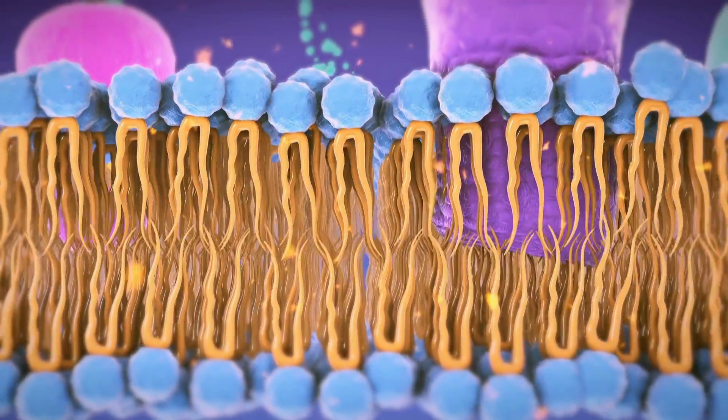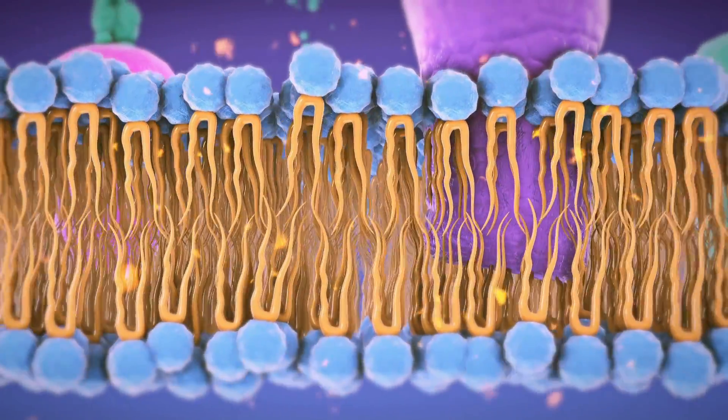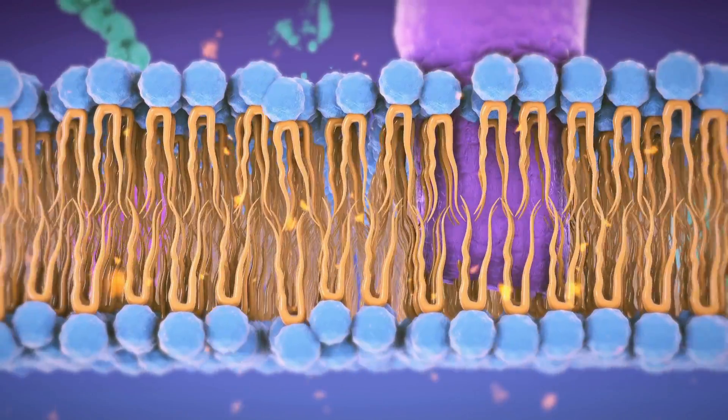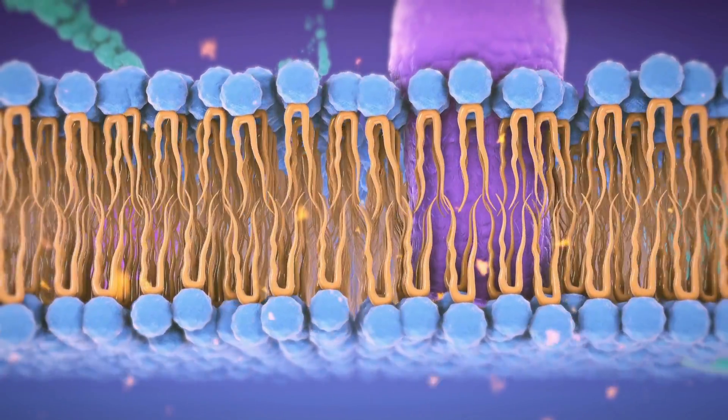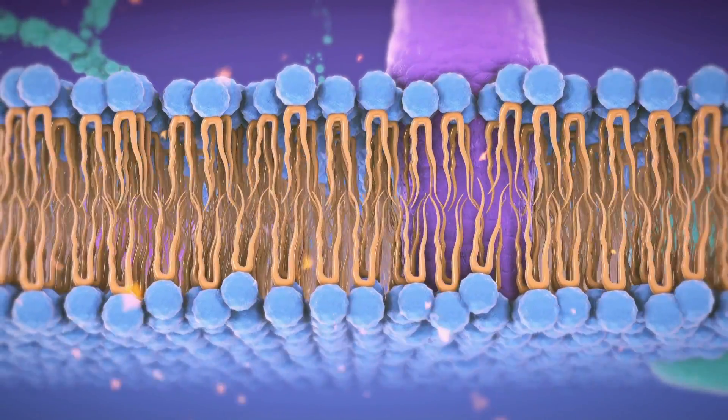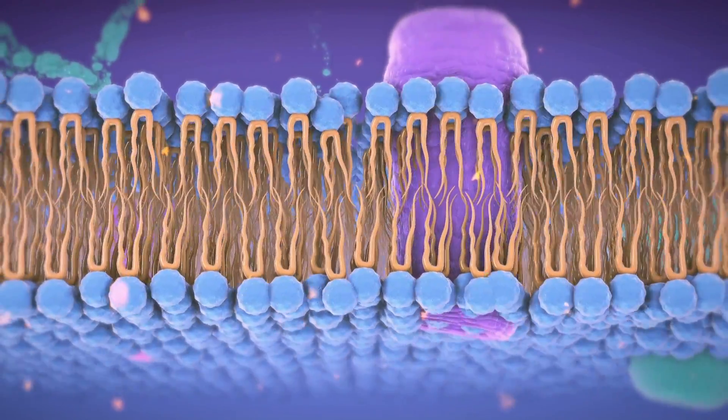The cell membrane isn't a stiff structure. It's more like a fluid, constantly moving and shifting. Scientists call this the fluid mosaic model because it's made up of different pieces, like proteins.